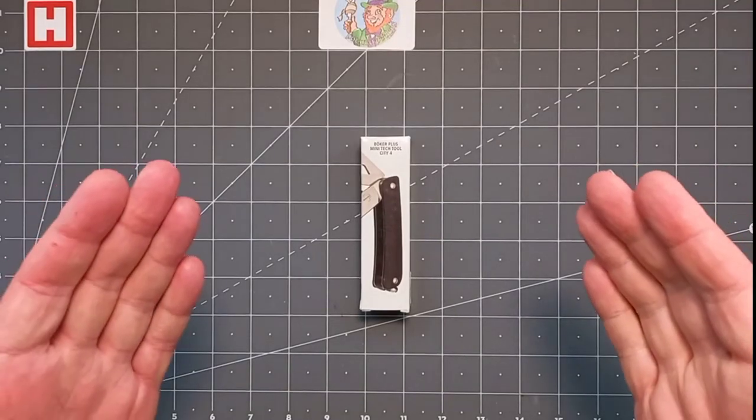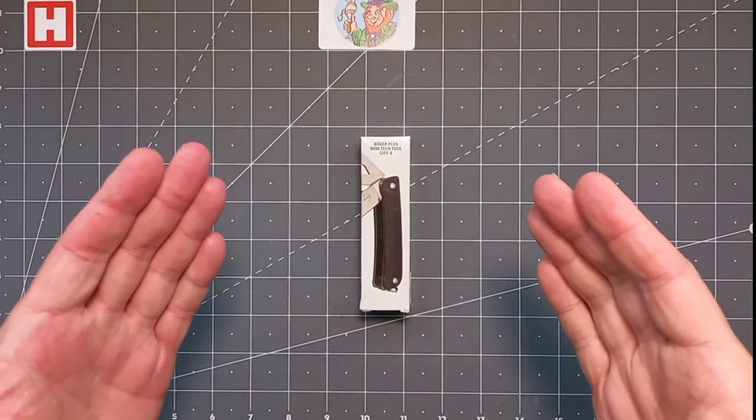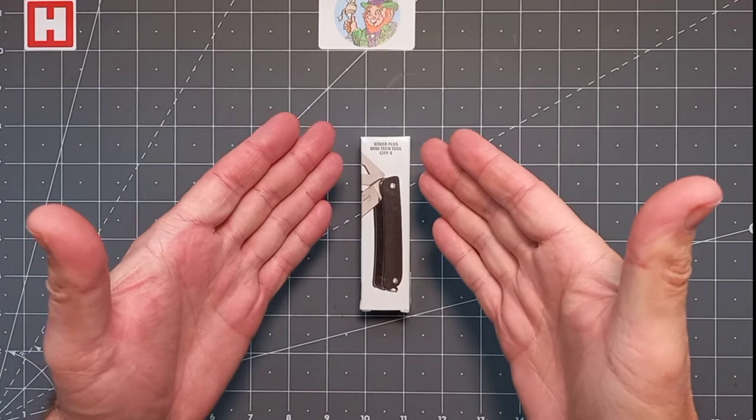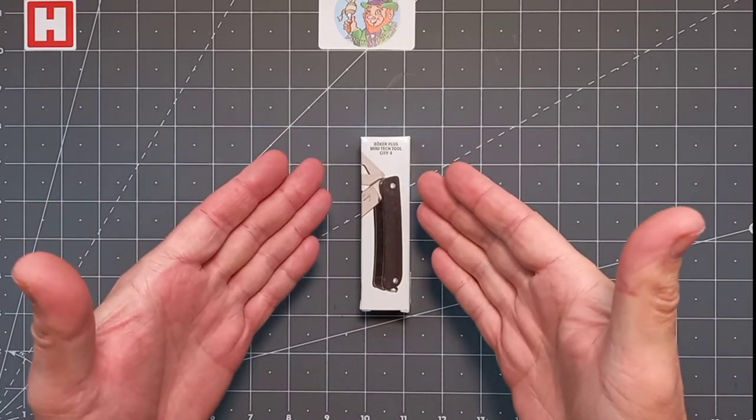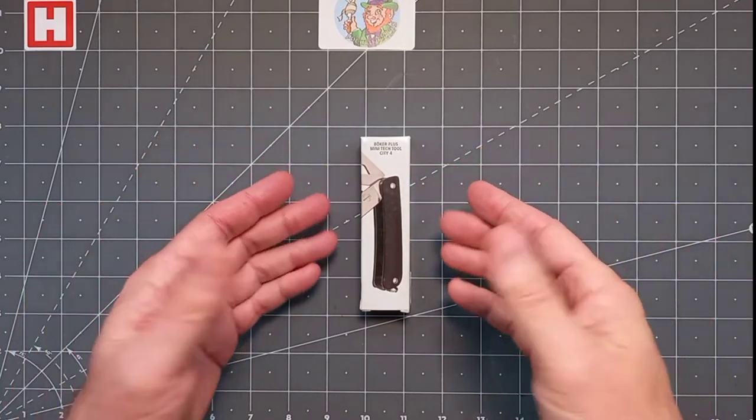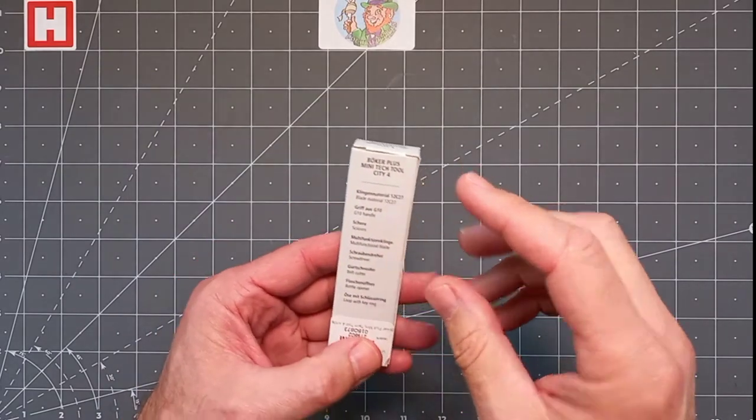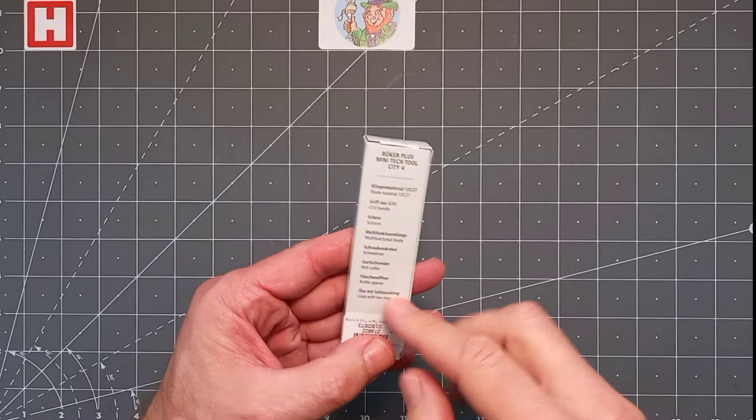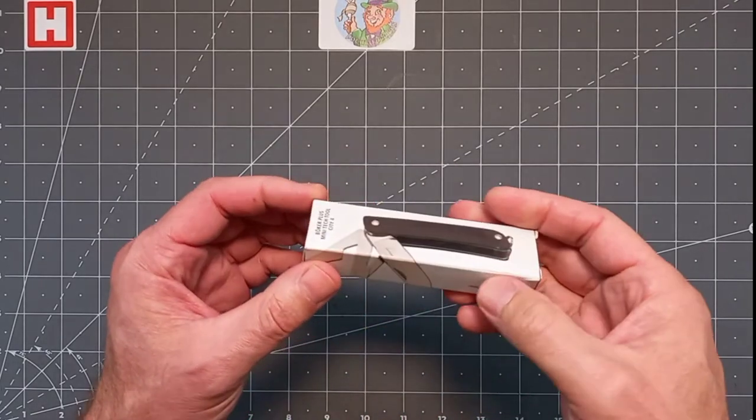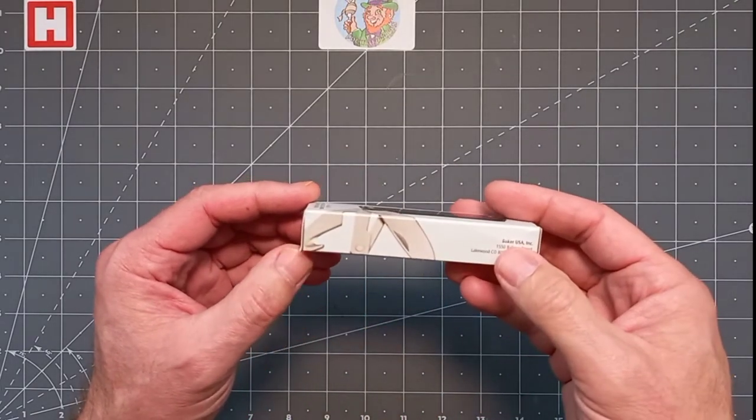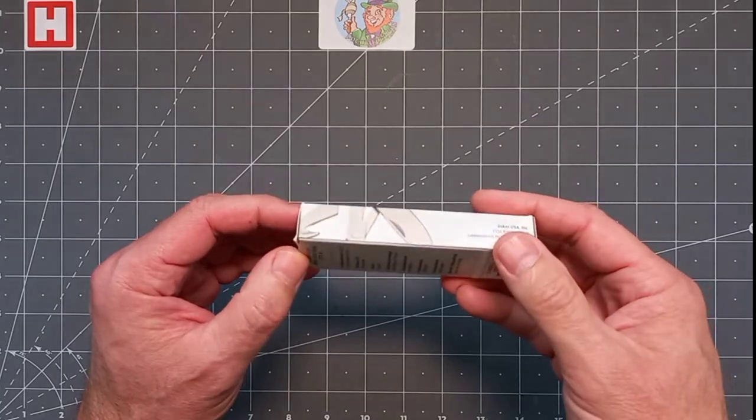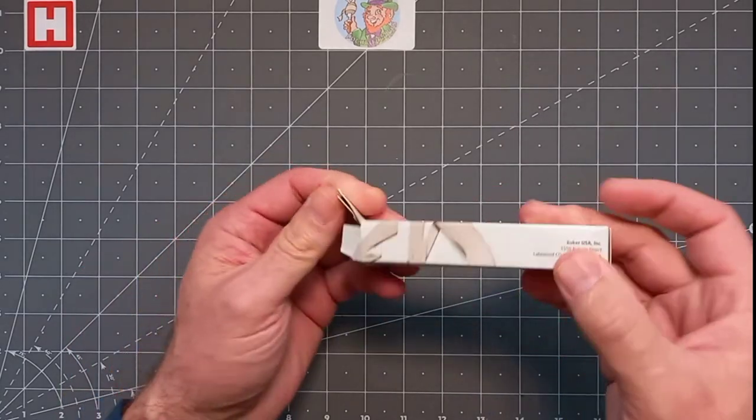Hello again everyone and welcome back. Today I've got for you a Böker Plus Mini Tech Tool City 4. This might surprise you if you don't know this one already. It comes in a reasonable basic cardboard box. It's a little multi-tool, a keychain multi-tool. Let's pop this puppy out.